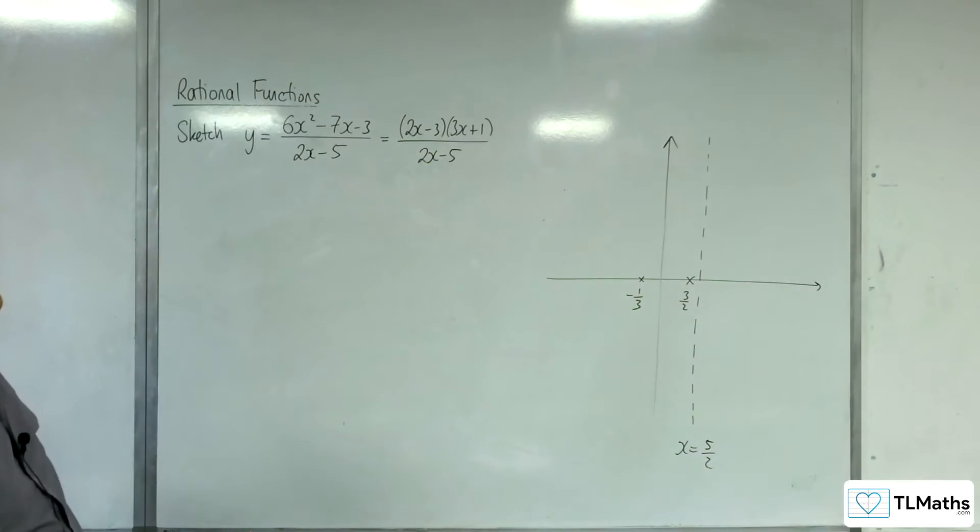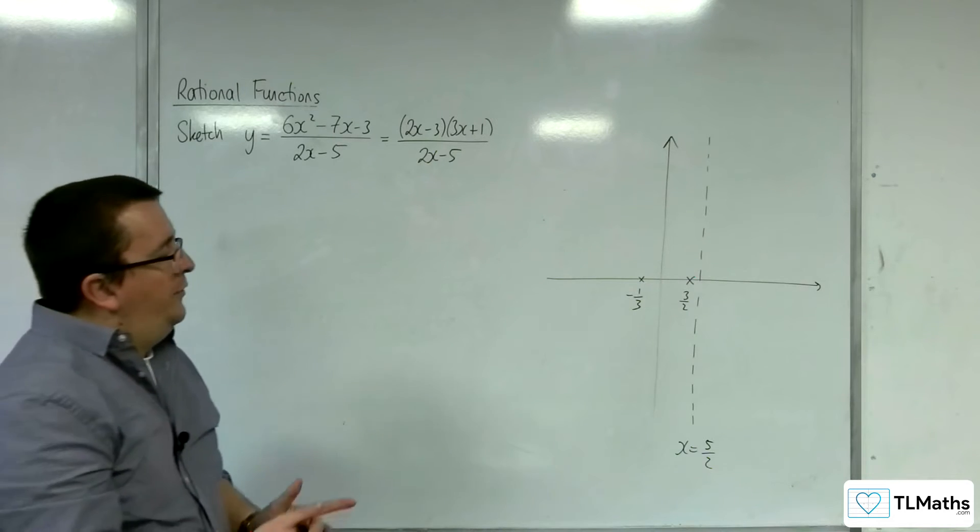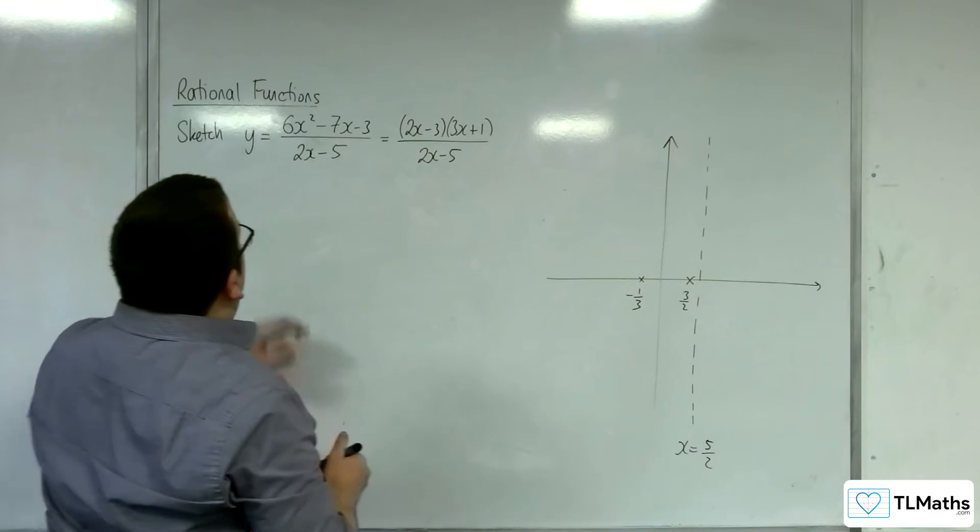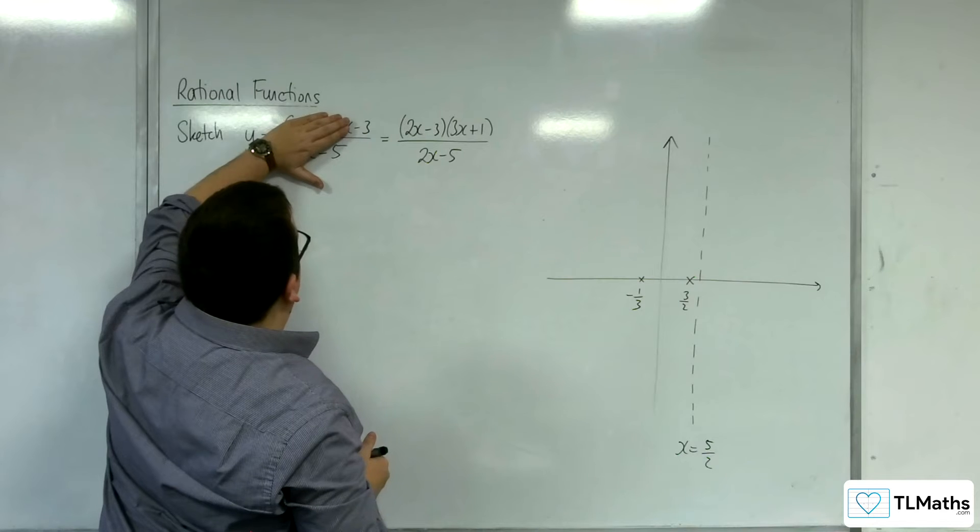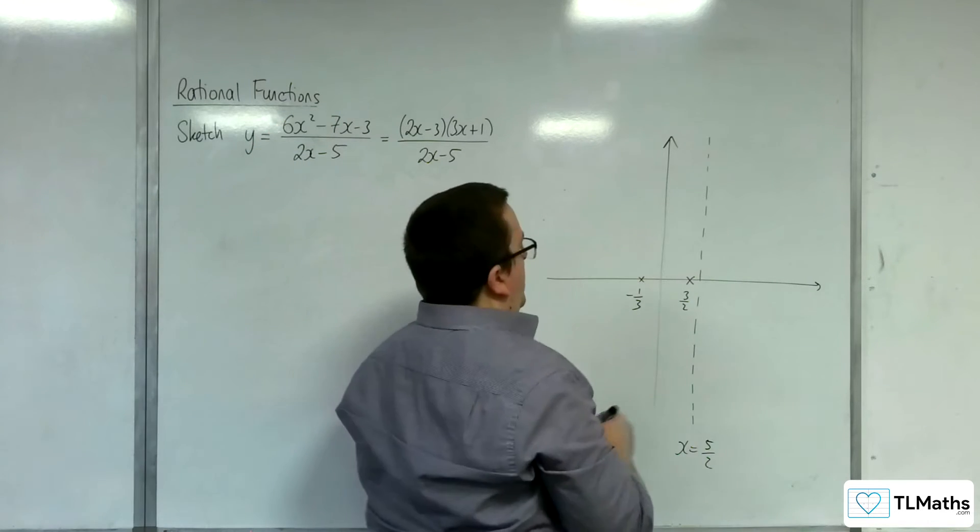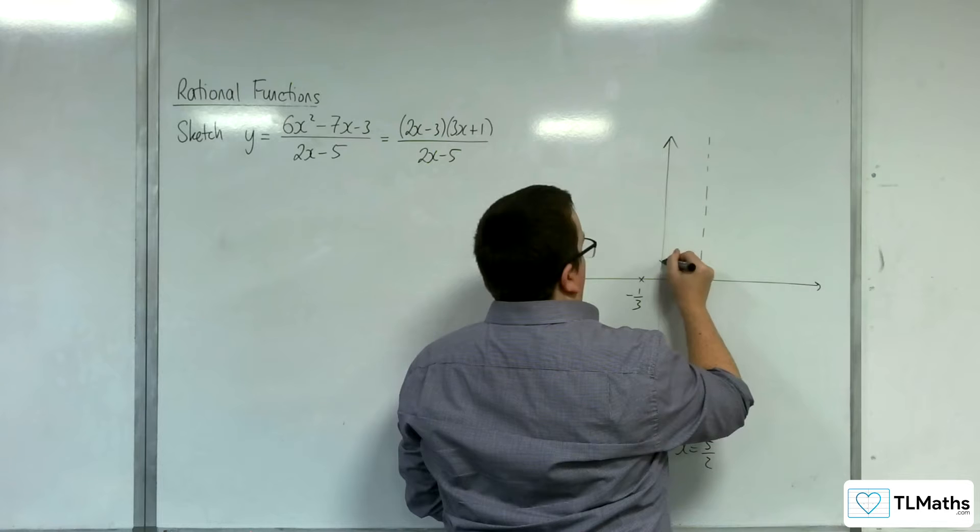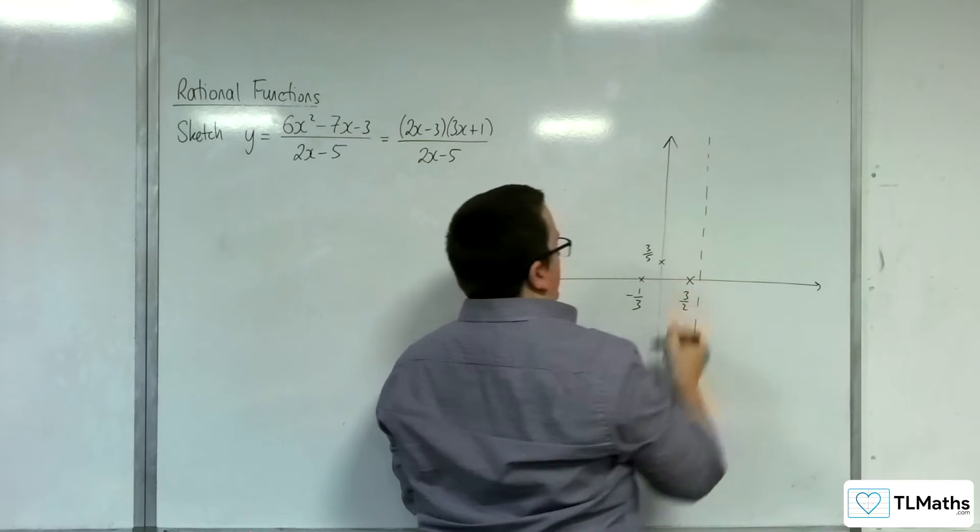How about where it crosses the y-axis? That's when x = 0, and so we would have -3/-5, which is 3/5.